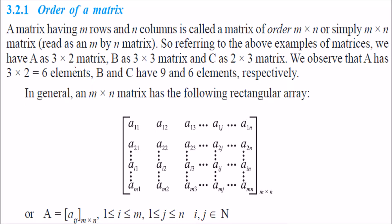What is the order of a matrix? If a matrix has m rows and n columns, it is called a matrix of order m × n, read as m by n. So we can have a 3 by 2 matrix, 3 by 3 matrix, 2 by 3 matrix, and it goes on.